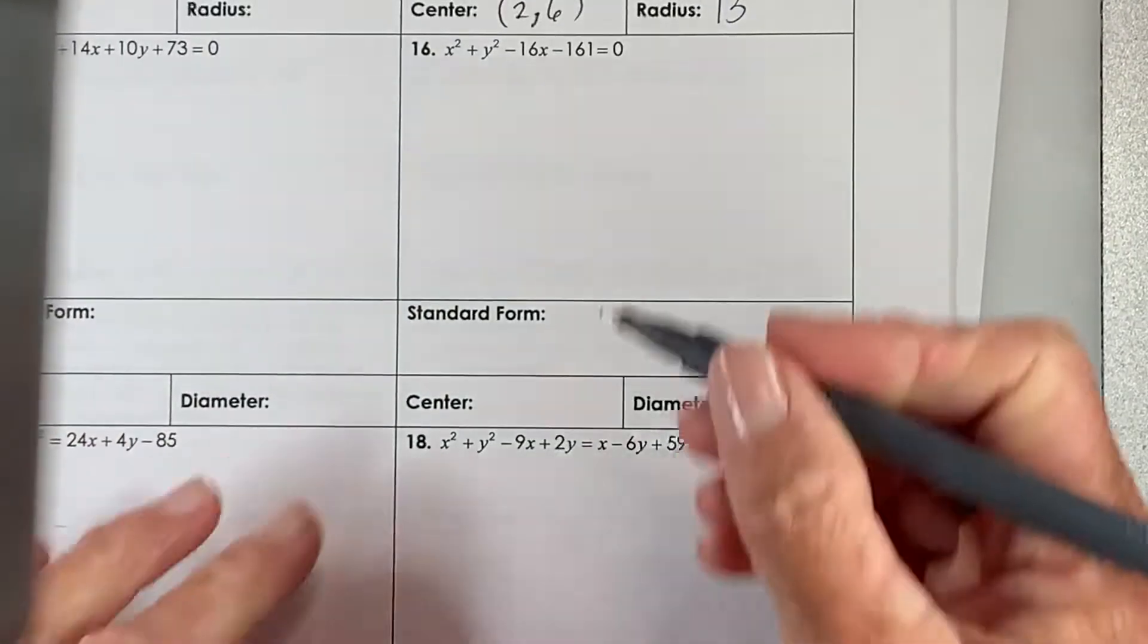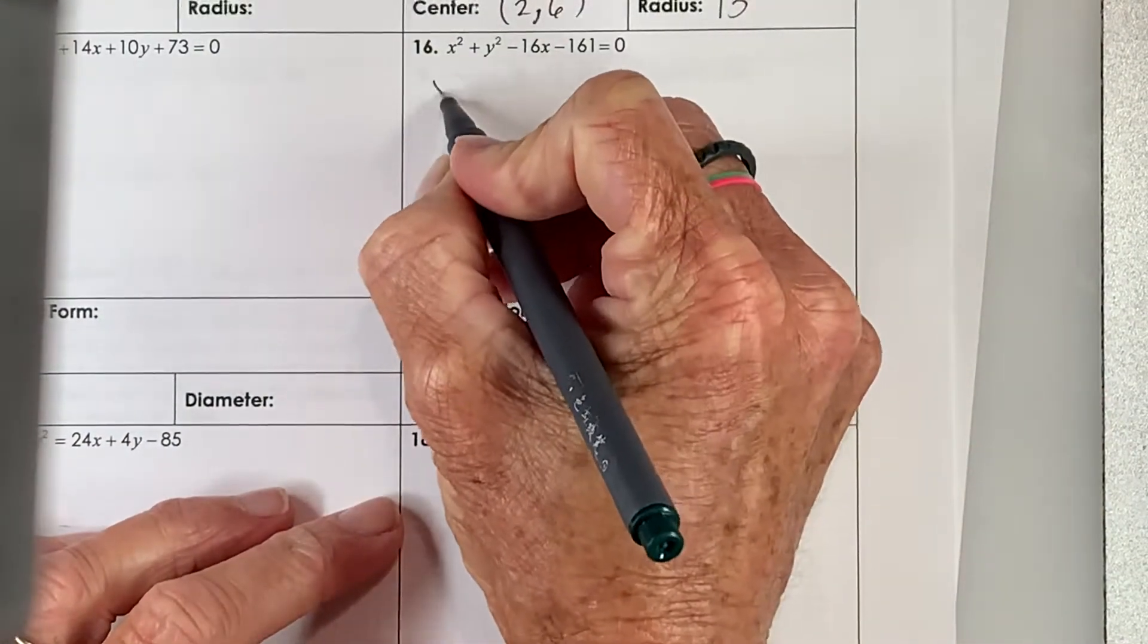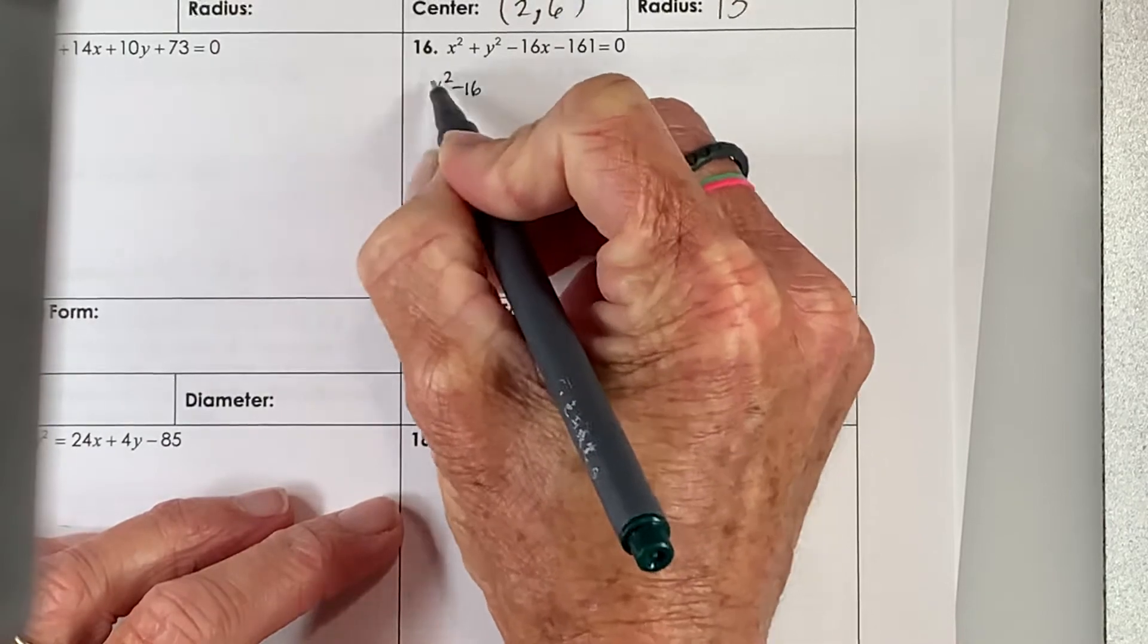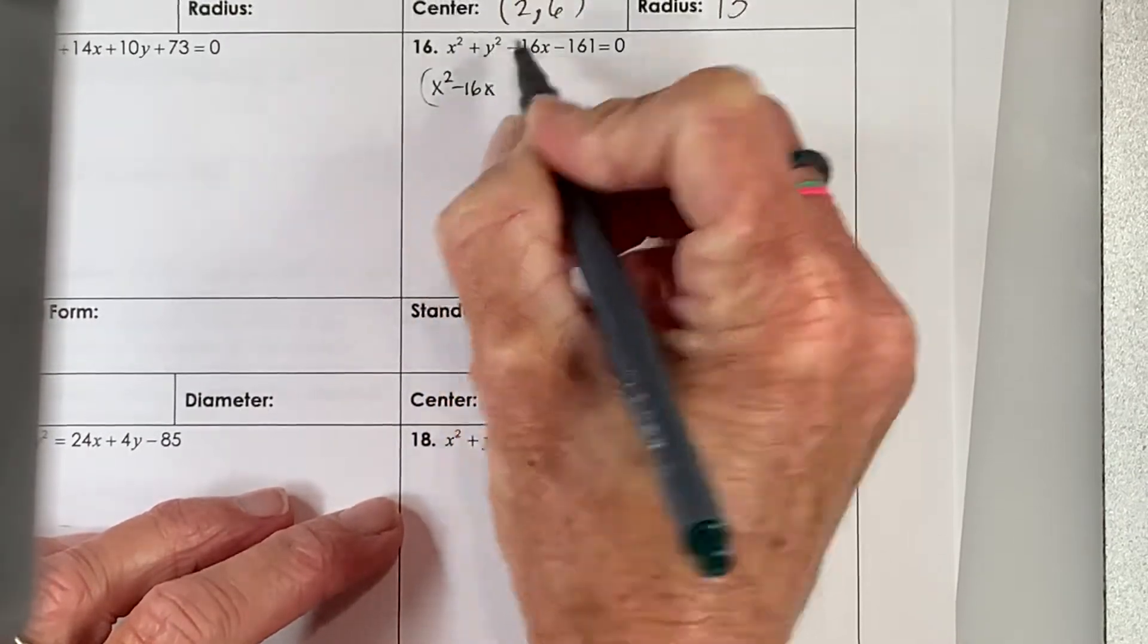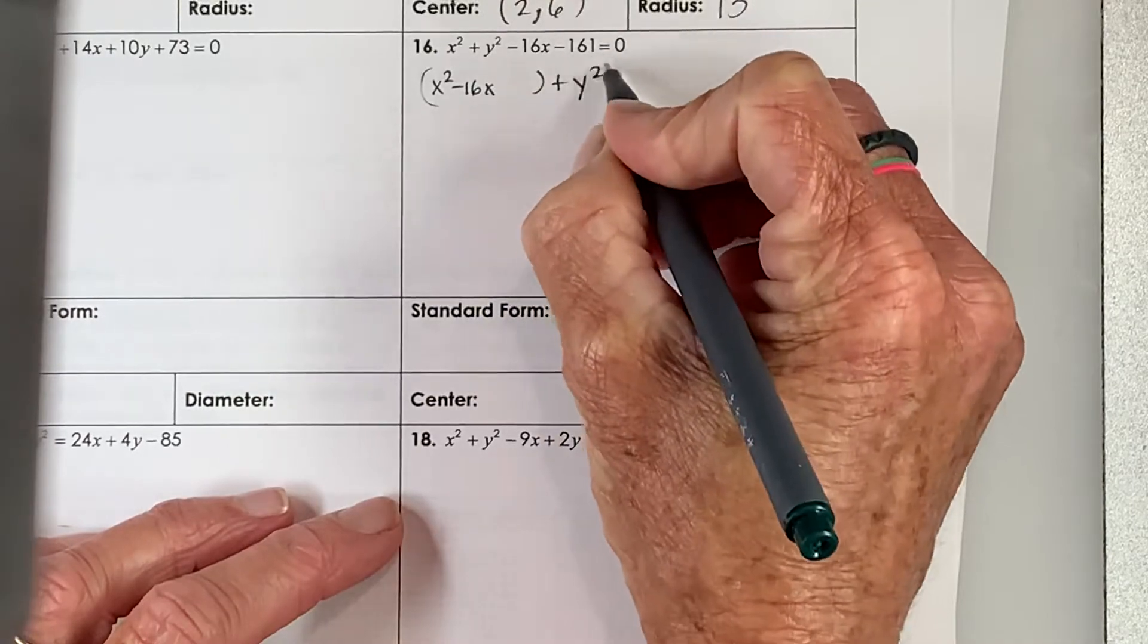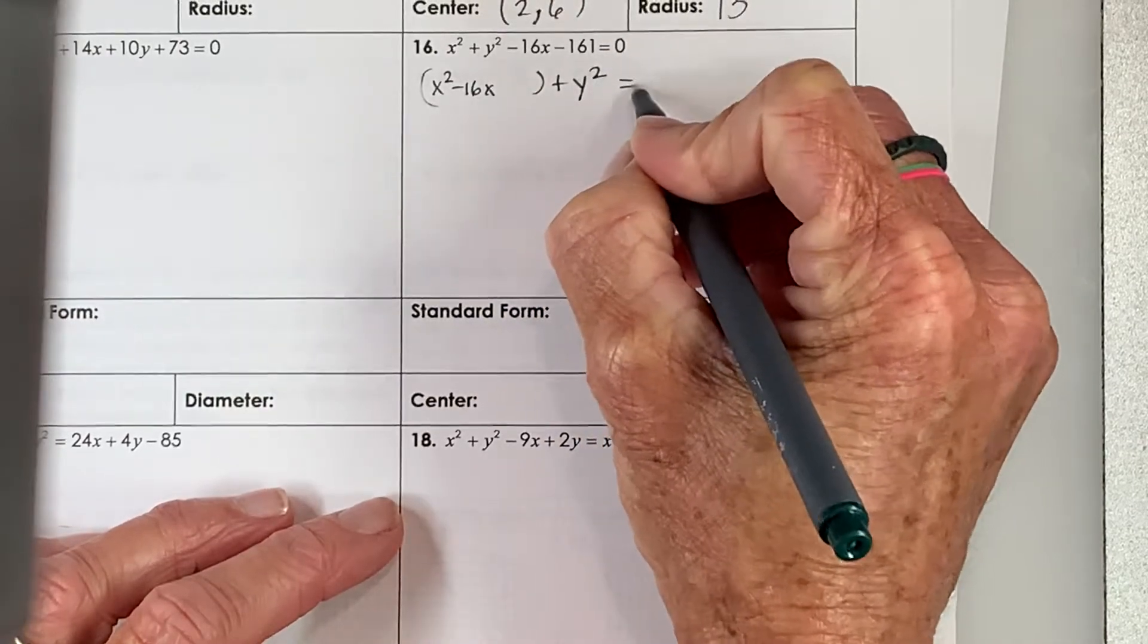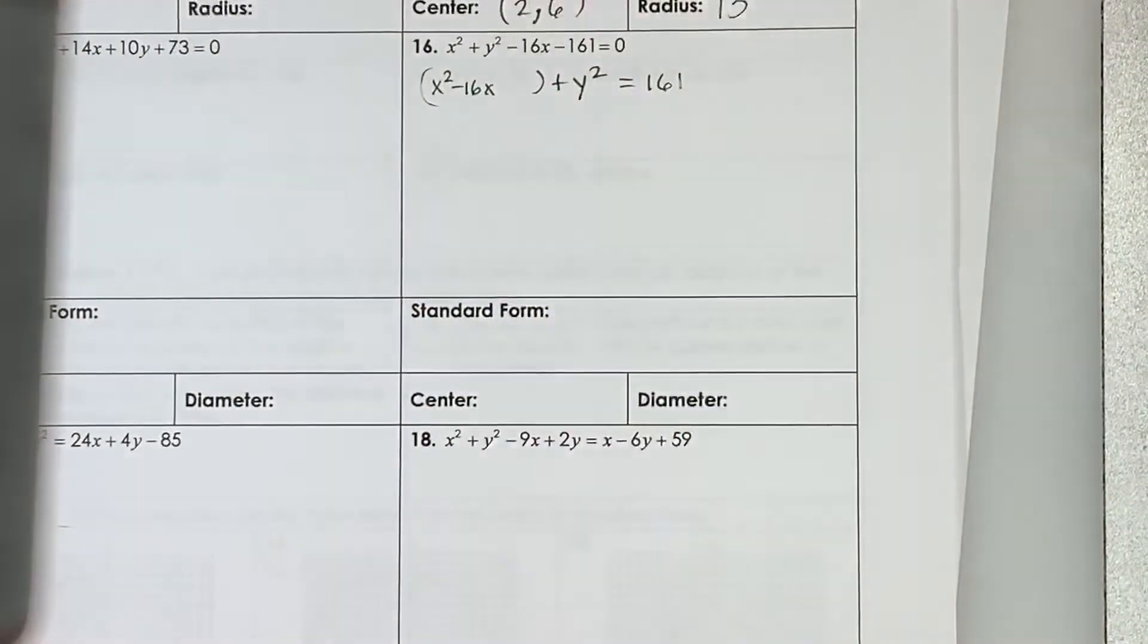Okay, we also had to do 16. We'll complete the square here. Grouping up our x's, there's just the single y term, and we'll go ahead and move that minus 161 over by adding it, so it's positive 161.